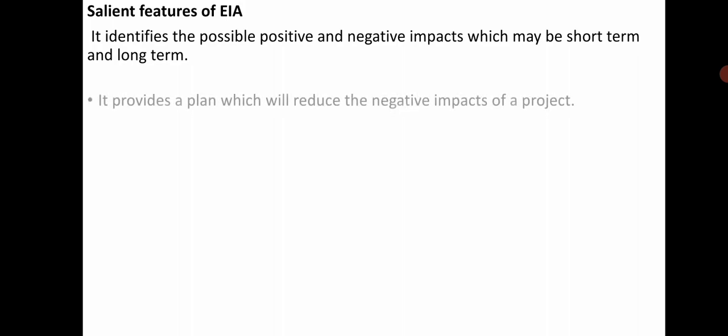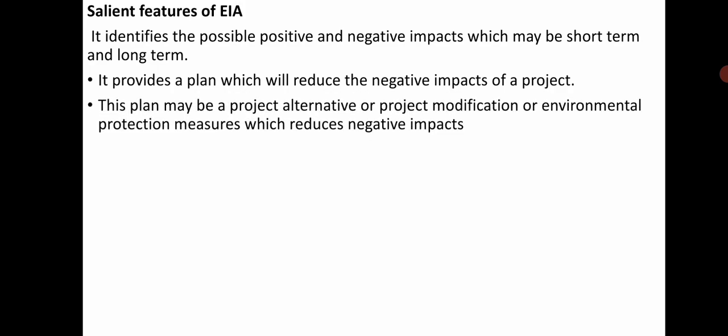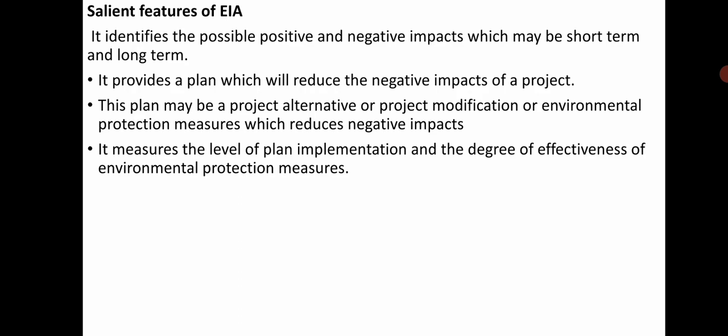Let us see the salient features of EIA. EIA identifies the possible positive and negative impacts, which may be of short or long time duration. It also provides a plan which will reduce the negative impacts of a project. The plan may be a project alternative, project modification, or environmental protection measures which reduce the negative impacts.